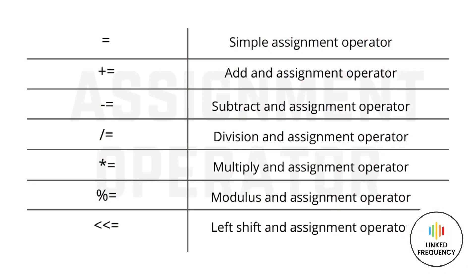Moving on to the assignment operator. The assignment operator is used to assign a value to a variable. The assignment operators include: simple assignment, add and assign, subtract and assign, multiply and assign, divide and assign, modulo and assign, and left shift and assign.